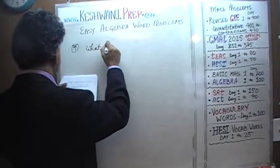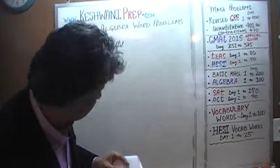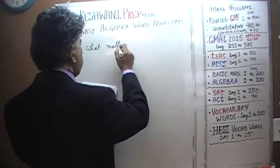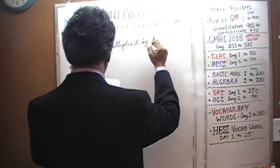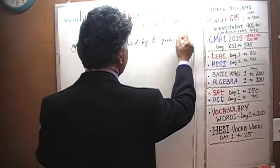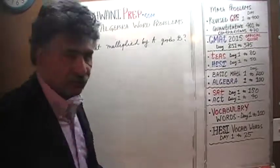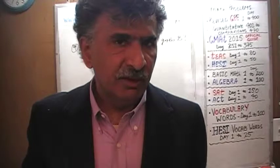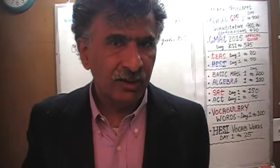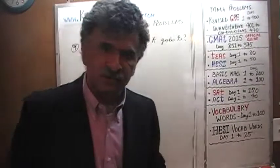What multiplied by A gives B? Now as we said yesterday, the easiest, simplest, quickest, most efficient method to deal with an algebra problem is to first plug in numbers — see what logic, what method, what rationale applies when you convert it into an arithmetic problem. And the same logic, same method, same rationale will apply in the algebra problem. Algebra and arithmetic are one and the same.